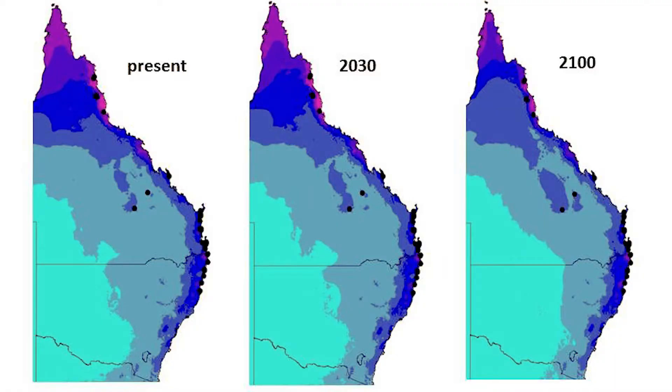For climate change, they're predicting increases in precipitation and increases in temperature. This is showing the precipitation in the wettest quarter. What we're going to be seeing in the future — worst case scenario — is reductions in precipitation at the northern part of the species range and then increases in precipitation at the southern part of the species range.